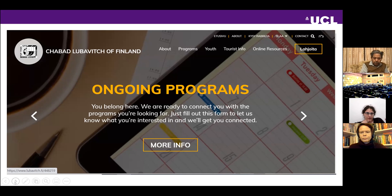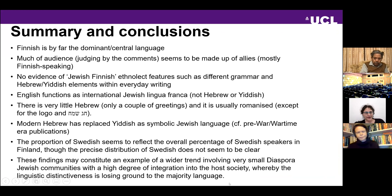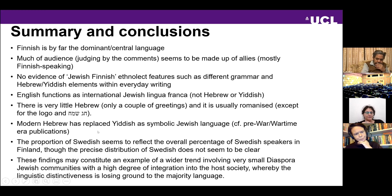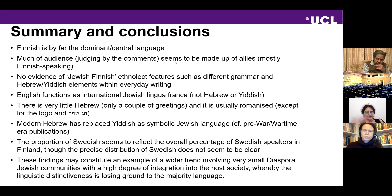In conclusion, in contrast to the 1940s data, Finnish is by far the dominant language. Much of the audience, judging by language use in comments and explanations, appears to be Finnish-speaking allies. There is no evidence of a Jewish Finnish ethnolect — no distinct grammar, Hebrew, or Yiddish elements in everyday writing, except for abbreviating the word for God. English functions as an international Jewish lingua franca; Hebrew is very little used and usually romanized except in the community logo. Modern Hebrew has replaced Yiddish as a symbolic Jewish language, and the proportion of Swedish is very low. These findings may represent a wider trend whereby small, highly integrated diaspora Jewish communities have lost their linguistic distinctiveness, replaced by the majority language.